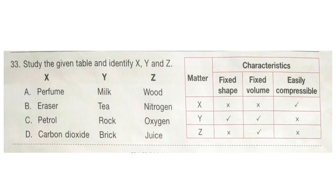Question 33: Study the given table and identify X, Y and Z. X does not have fixed shape, does not have fixed volume, but is easily compressible — so it can be gas. Y has fixed shape, fixed volume, and is not easily compressible — so that can be solid. Z does not have fixed shape but has fixed volume and is not easily compressible — so it can be liquid. The correct answer is option D: X is carbon dioxide, Y is brick, and Z is juice.